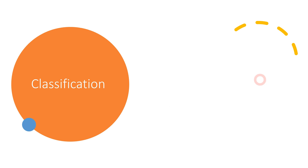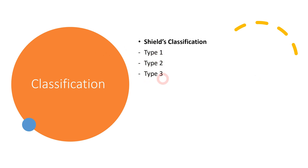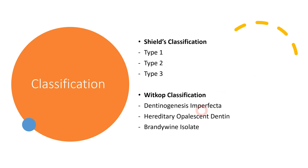There are two classification systems used for dentinogenesis imperfecta. The first is the Shields classification, with Type 1, 2, and 3. The other is the Vitcorp classification, which includes dentinogenesis imperfecta, hereditary opalescent dentine, and Brandywine isolate. Both classifications are used in combination.